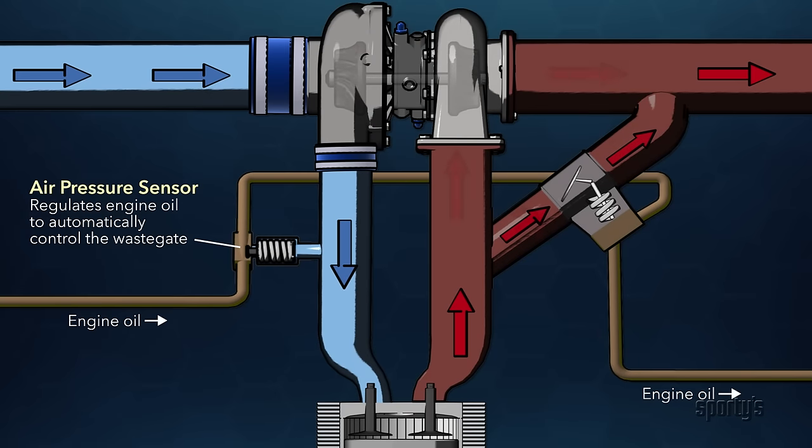More automatic systems use sensors at various points in the induction system to maintain manifold pressure through wastegate adjustments. Air pressure sensors in the induction system regulate pressure in oil lines that change the position of the wastegate. When the full output of the turbocharger is used, the wastegate is completely closed and there is no longer any automatic control.